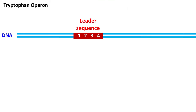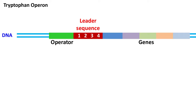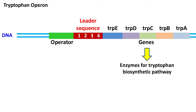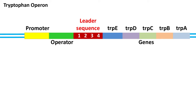Now let's see the phenomenon of regulation of tryptophan operon. The leader sequence is located between the operator and the genes of tryptophan operon, which are trpA, trpB, trpC, trpD, and trpE. These genes have a role in synthesis of enzymes required for the biosynthesis of tryptophan. The promoter is located upstream of the operator, and besides all these genes, there is also a trpR gene that codes for trp repressor.